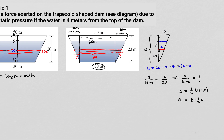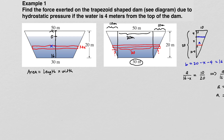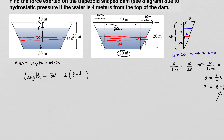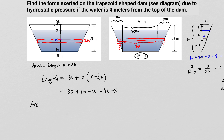The distance a = 8 − (1/2)x is the extra portion on each side of the rectangle. The total length of the rectangle is 30 plus 2 times a, which is 30 + 2(8 − (1/2)x) = 30 + 16 − x = 46 − x. So the area of the rectangle at depth x is (46 − x) times delta x.